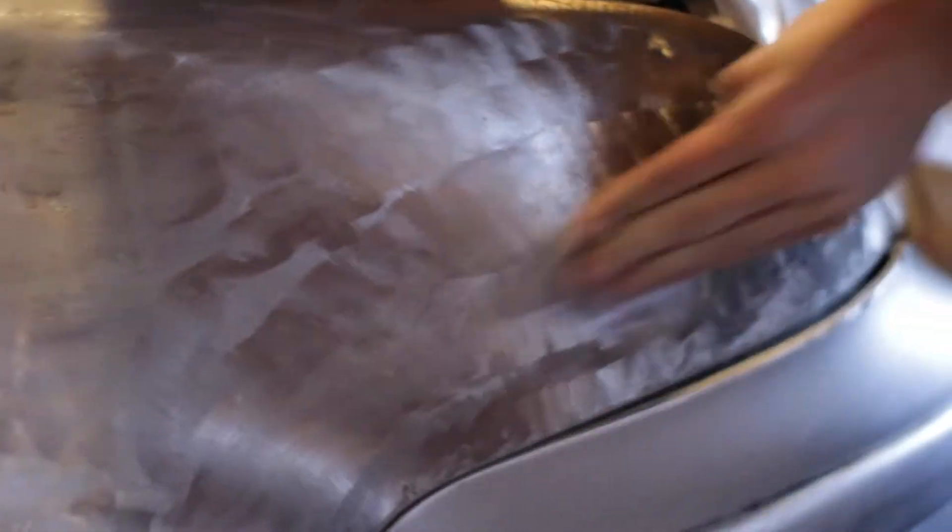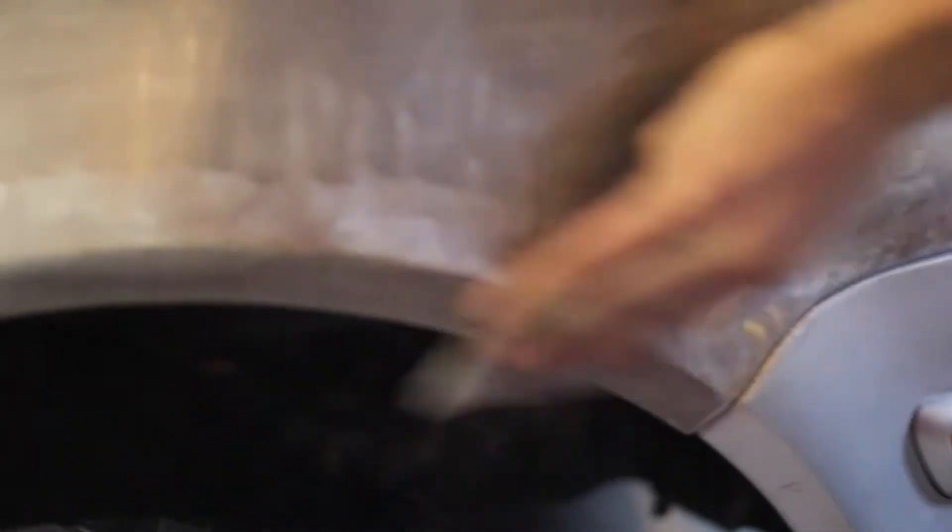We are now sanding the clear coat off because the clear coat will keep the reactions from occurring, so we can get ultimate rust action on the car.